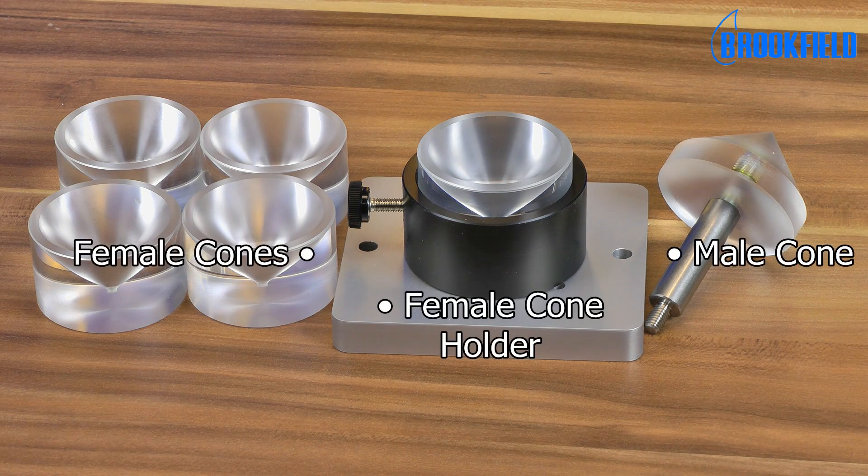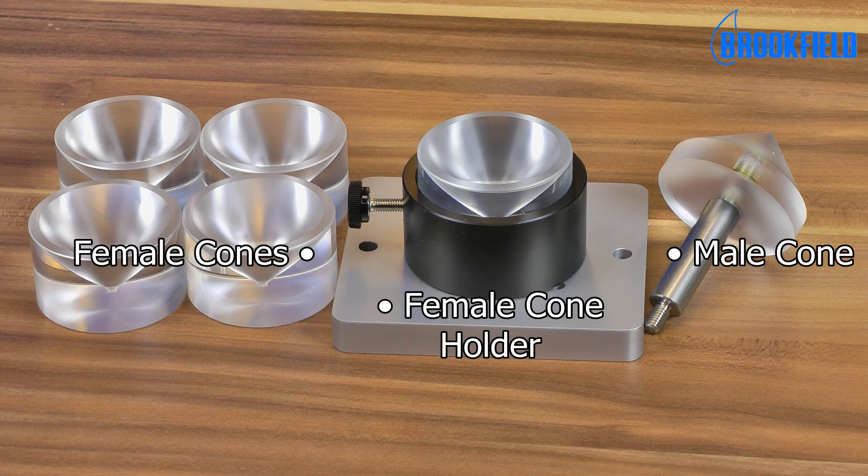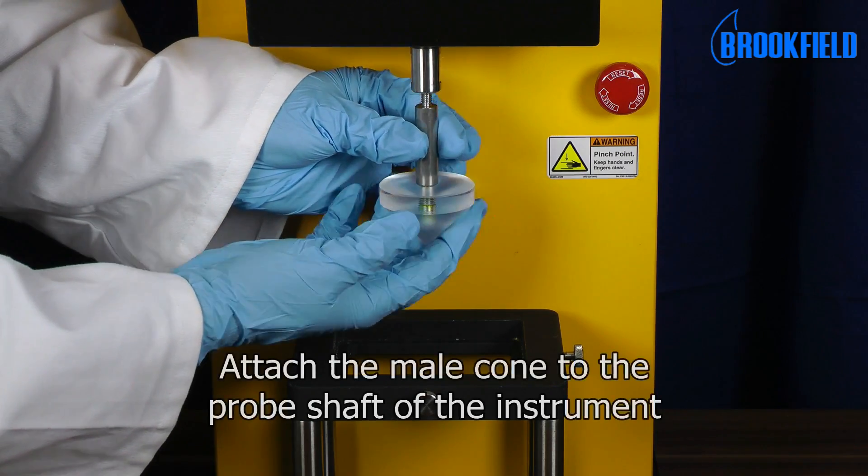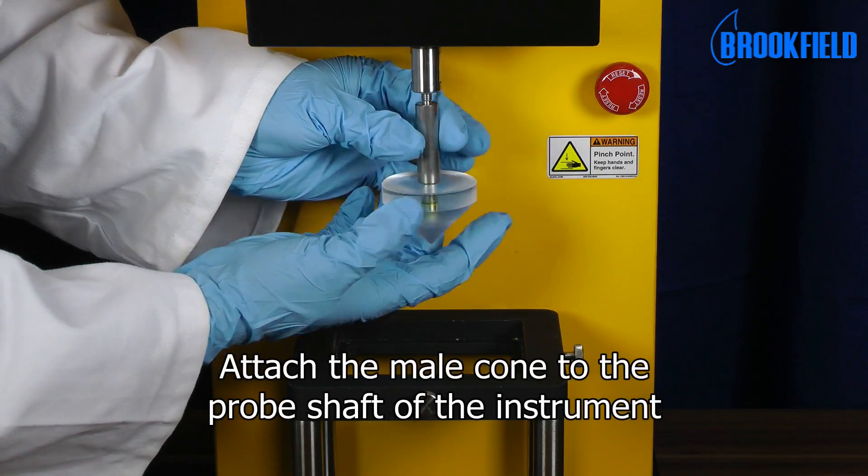Here you see the individual parts of the fixture. To set up the test, attach the male cone to the probe shaft of the instrument.